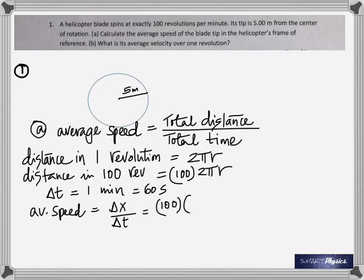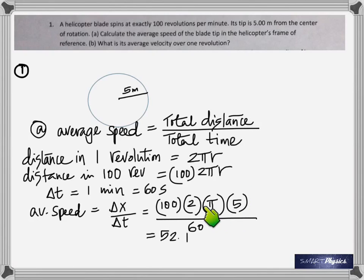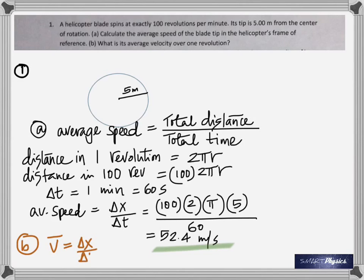In 100 revolutions the total distance is 100 times 2πr, where the radius is 5, and the time is 60 seconds, so you get the average speed. To find the average velocity, it's total displacement over total time. The total displacement is zero because it's returning back — going around in circles, coming back again and again to the same point. So the average velocity is zero.